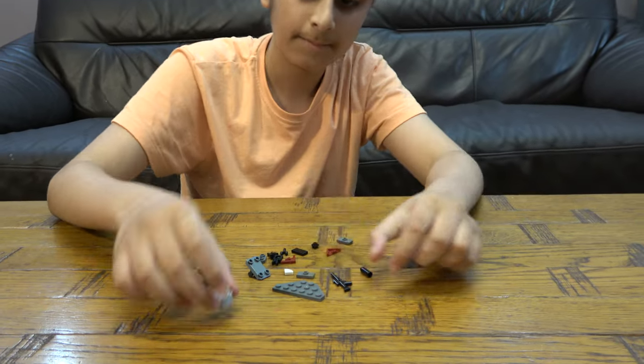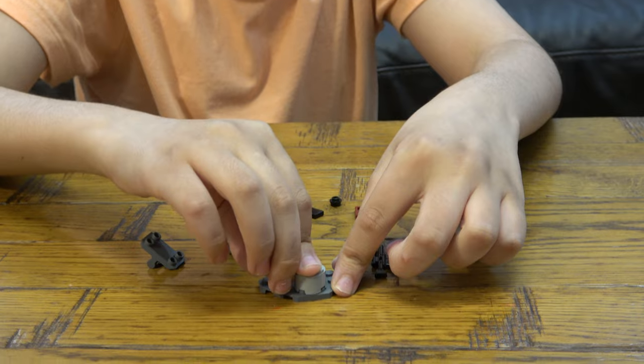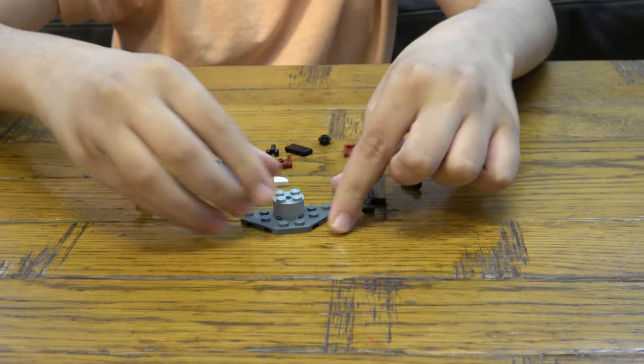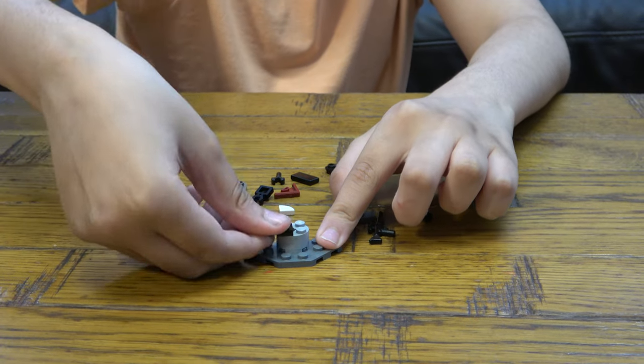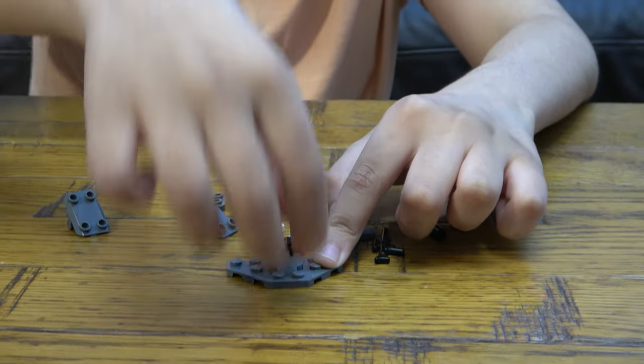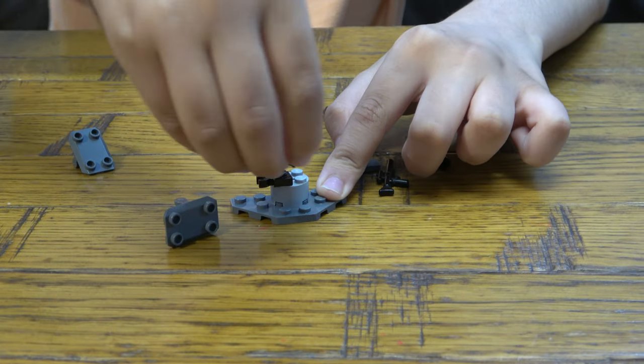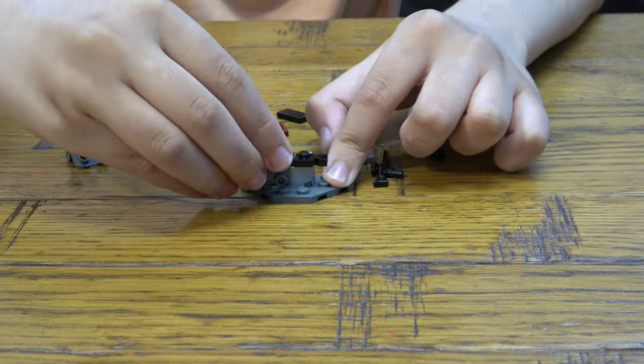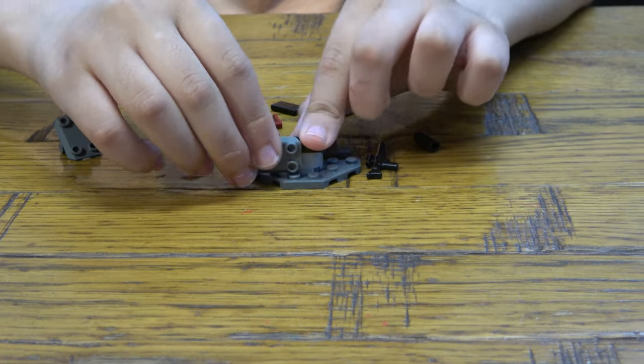First things first, you're going to get this here like that. You're going to get these up like so. You have to align it up with the stud, so basically you see the stud here, when you put it on it should perfectly align with the stud.